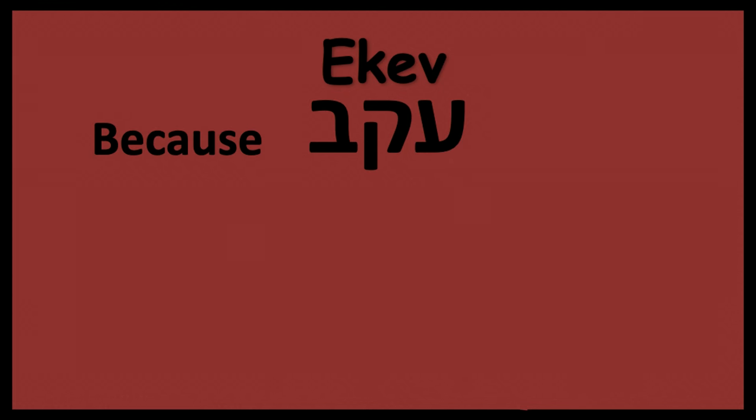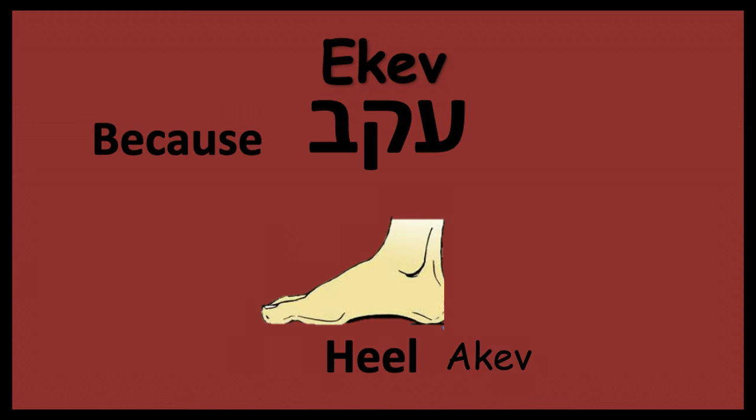Look at Genesis 3:15. God was talking to Adam and Eve, speaking to the serpent: 'I will put enmity between you and the woman, and between your seed and her seed — it will bruise your head and you will bruise his heel.' Guess what the Hebrew word for heel is. Heel is akev. Ekev is 'because or if.' Akev is 'heel.' It's the same word, pronounced differently.